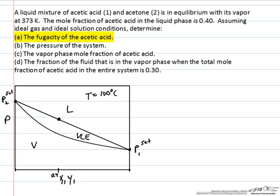The first question is to determine the fugacity of the acetic acid. We're told we can assume ideal gas and ideal solution type behavior, and so therefore we can say that the fugacity of component 1, if it's ideal solution then we can assume Raoult's law for the liquid phase, and so the fugacity for the liquid phase is equal to x1, or the mole fraction in the liquid phase of component 1, times the saturation pressure of component 1.